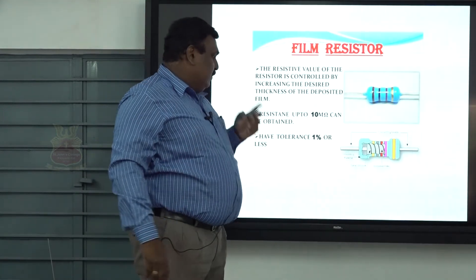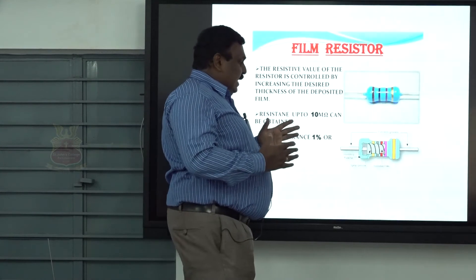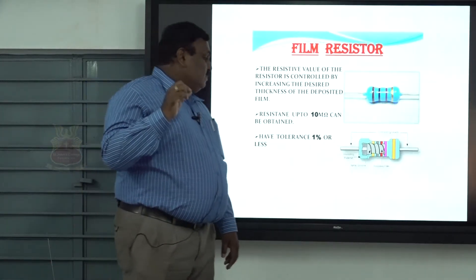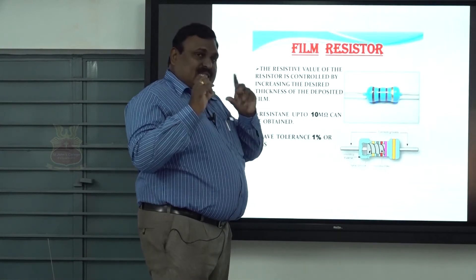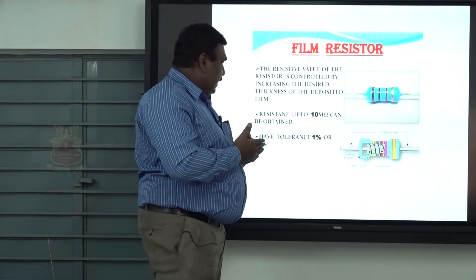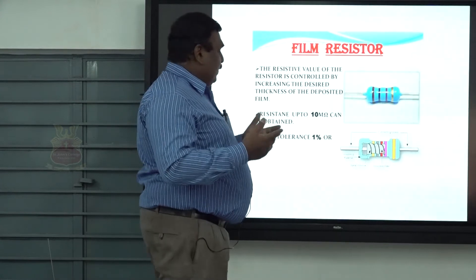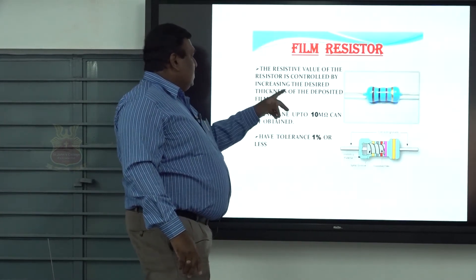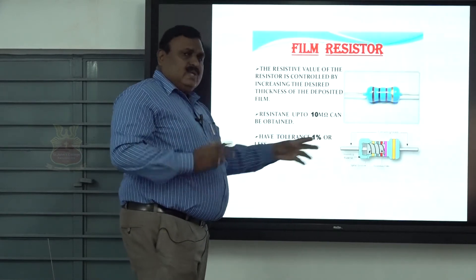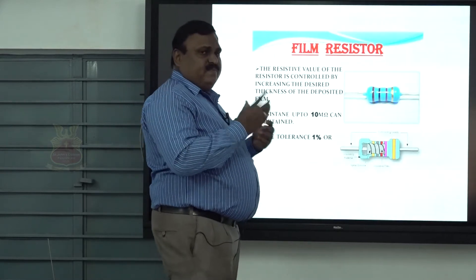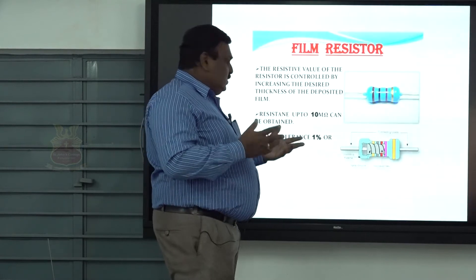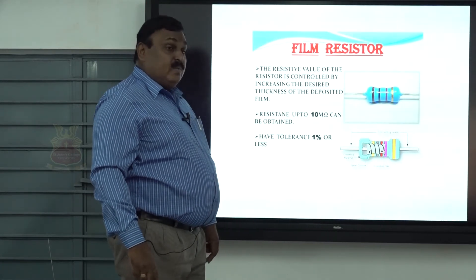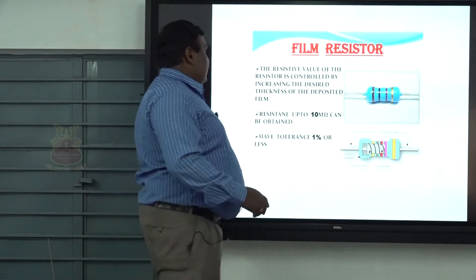Next is film resistance. The same method is taken as in the carbon composite, but instead we use resistive films. The film resistance depends on the thickness, size, and type of material. Different ohm values can be constructed using film type resistors. By changing the thickness of the deposited film, you may increase or decrease the value. Large values can be constructed using film resistance. The tolerance is very less compared to carbon composite.